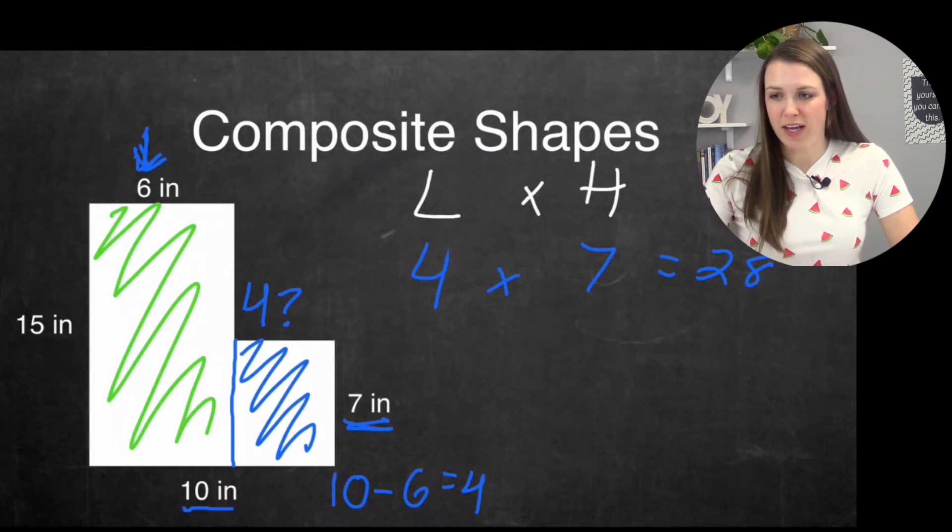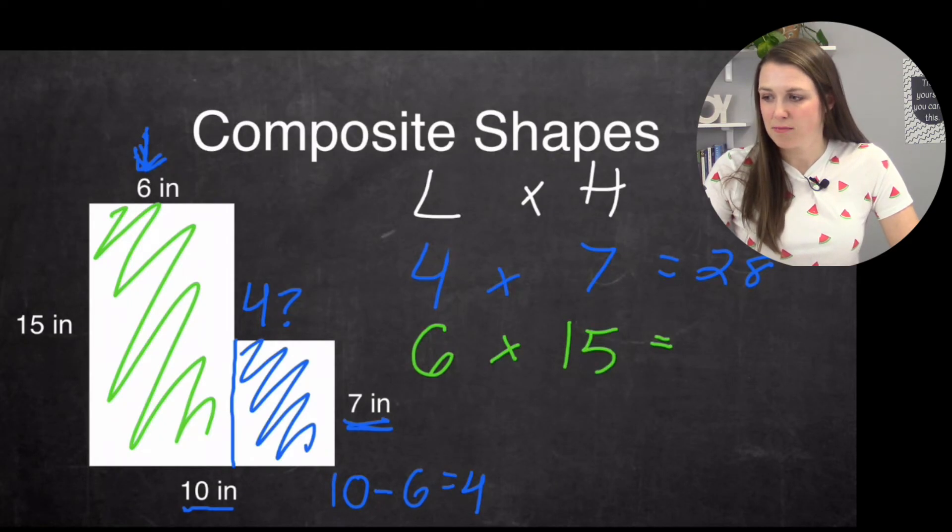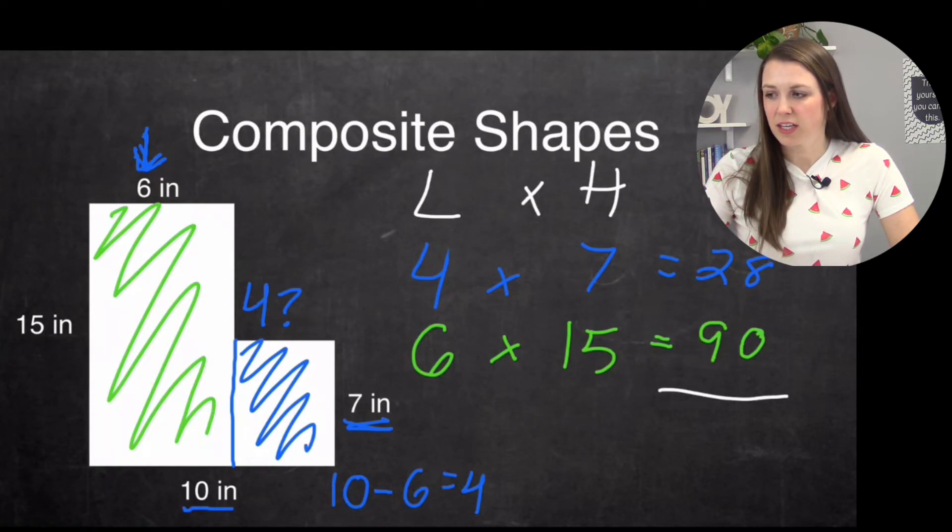And now let's do the green one. Looks like I don't have to do any extra math on the green. So I have my length, which is six times my height, which is 15. And I simply get 90. Add the two together, 28 plus 90. So we have the eight, bring it down, 118 inches squared.